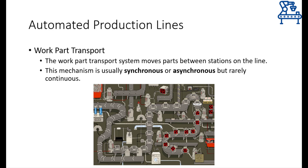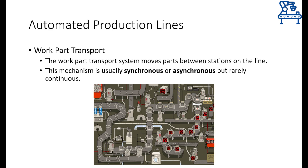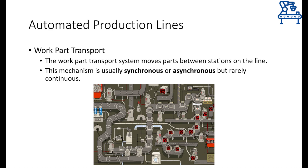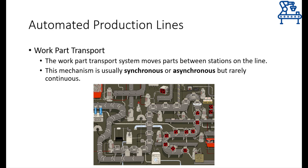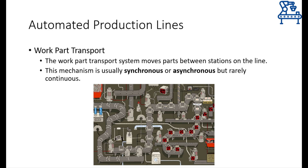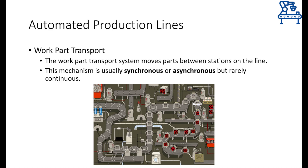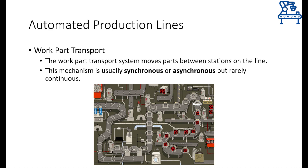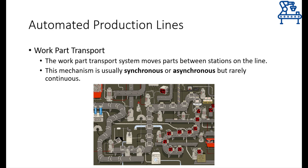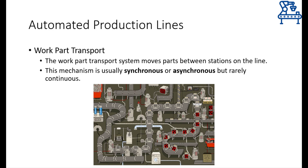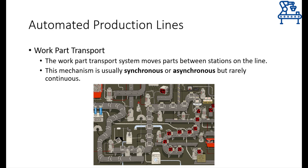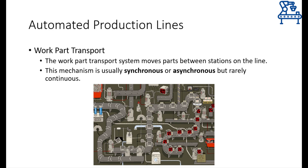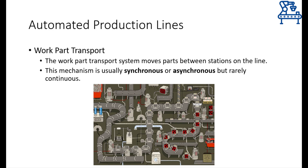The fact that the conveyor remains stationary allows different machine tools to take their time for processing the part. When all machines are done processing, the conveyor will carry the work units to the next station. The time for which the conveyor will remain stationary depends on the machine tool that takes the largest time to process the part. If the processing time difference between the machine tools on the production line is too much, then machine tools having small processing time would be largely underutilized. Therefore, synchronous mechanisms are used by work transport systems if processing time required by individual machine tools has a small variation.